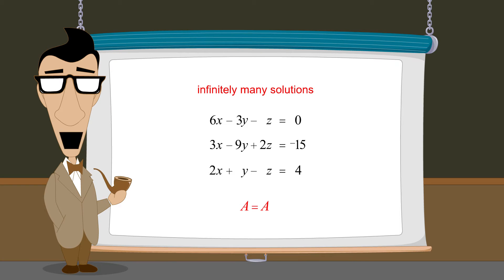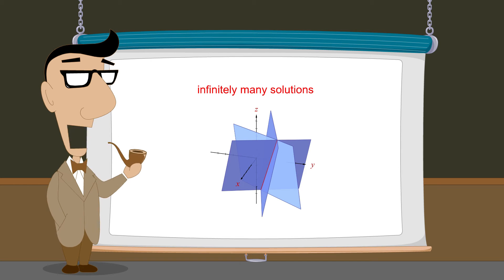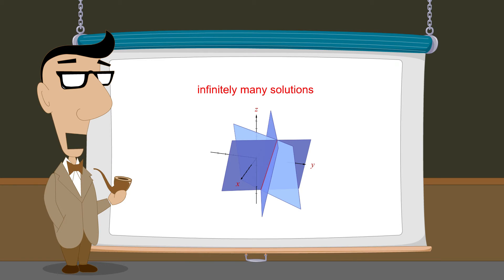A system of linear equations in three variables has infinitely many solutions when all the planes in the system intersect along a line or when all the equations describe identical planes.